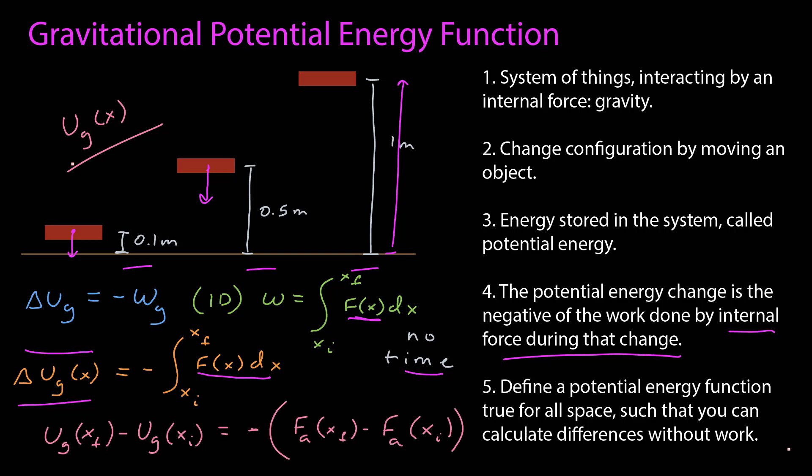By the fundamental theorem of calculus, the difference between the potential energy function evaluated at those two points is opposite the difference between the indefinite integral of the force function. This means the gravitational potential energy function is the negative anti-derivative of the gravitational force.